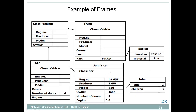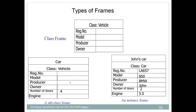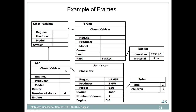Here is another example of a frame. Vehicle is the base class, whereas truck and car are two subclass frames. Vehicle is a class frame, car is a subclass frame, and truck is also a subclass frame. There is also an instance frame. In this way we have represented the information from the base class vehicle, where truck and car are derived subclasses, and from car we have derived one instance called John's car. This is how frame representation works.